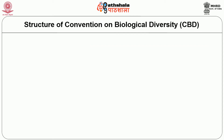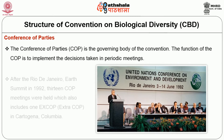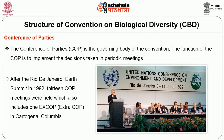The structure of the Convention on Biological Diversity includes the secretariat, the Conference of Parties, and other subdivisions. The Conference of Parties, simply called COP, is the governing body of the convention. Its function is to implement decisions taken in periodic meetings. After the Rio de Janeiro Earth Summit in 1992, 13 COP meetings were held, which also includes one extra COP held in Cartagena, Colombia.